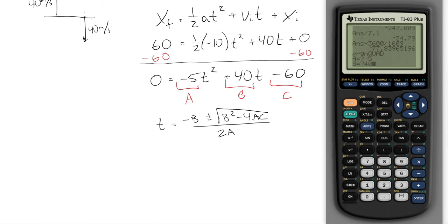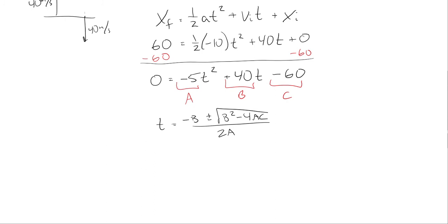Which is negative 5, my B term, which is 40, and my C term, which is negative 60. And notice, I'm going to get two roots. T equals to 2 seconds and T equal to 6 seconds.